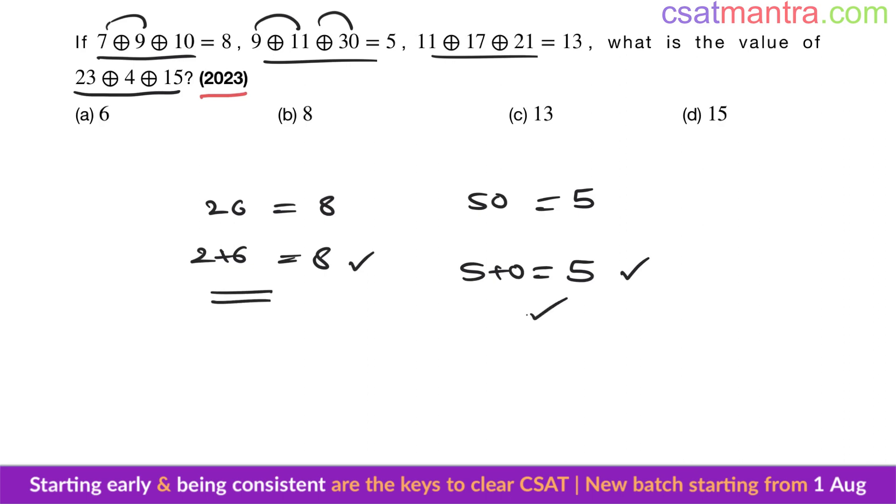Now 11 plus 17 is 28, 28 plus 21 is 49. So 49 is equal to 13, 4 plus 9. Yes, this is 13, the same relation holds here as well.